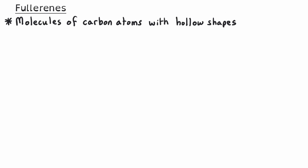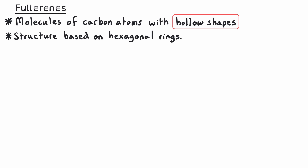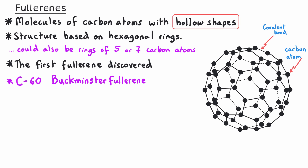Fullerenes are molecules of carbon atoms with hollow shapes. Commonly, the structure of fullerenes is based on hexagonal rings, but they could also include rings of five or seven carbon atoms. The first fullerene to be discovered — and the one most likely to appear in exams — is called C60 Buckminster Fullerene. The C60 refers to the 60 carbon atoms connected by covalent bonds to make the ball shape. From the diagram, you can see repeating pentagons and hexagons in a pattern very similar to the stitching on a typical football. Spherical fullerenes like C60, and also C70, have a number of applications linked to their shape.